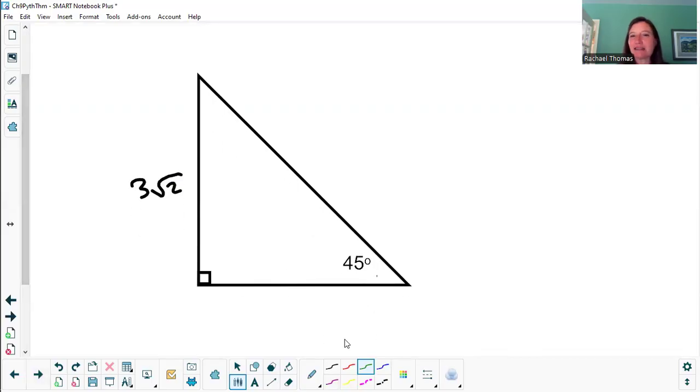Then sometimes we get these kind of funky things. This might be our last example here. This has a square root of 2 on it, but that doesn't mean it has to be the hypotenuse. If I look at my pattern, the right angle, both of the things that touch the right angle are my congruent sides, x and x. So that means this side down here is also 3 root 2.